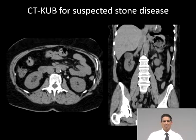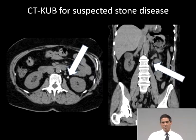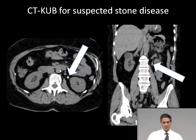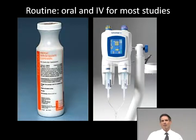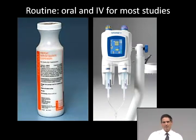Most studies are performed with some combination of oral and IV contrast. This CT-KUB with arrows shows a renal stone causing acute onset of left flank pain due to obstruction of the proximal ureter.